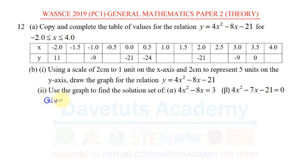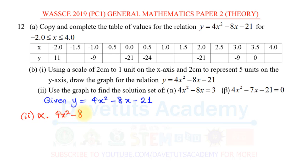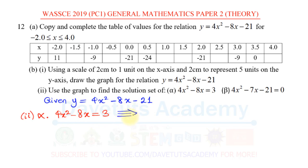Originally, we are given y = 4x² - 8x - 21. But in question 2 alpha, what we have is 4x² - 8x = 3. All we need to do to use the same graph to solve this equation is to make sure that y is reflected in this expression. Our process will manipulate this equation so that y appears in it — I want you to follow what I'm going to do.